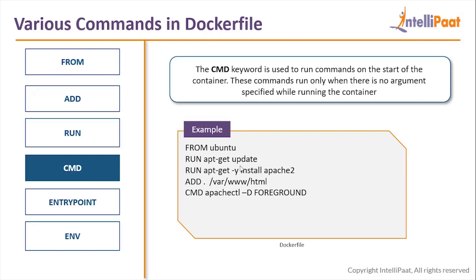Previously when we started the container, we always had to go inside it and start the Apache service manually by typing 'service apache2 start'. But when you pass a command using CMD, it runs automatically at startup. So 'CMD apachectl -D FOREGROUND' will run Apache the moment the container starts. CMD runs commands at container runtime, but only when no argument is specified in the docker run command - if an argument is specified, CMD will be skipped.